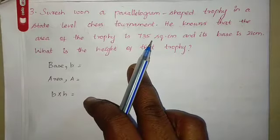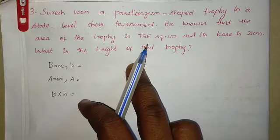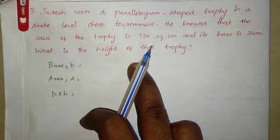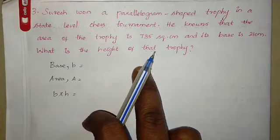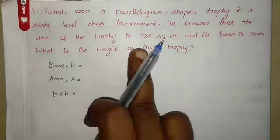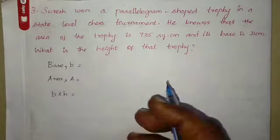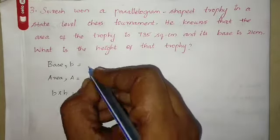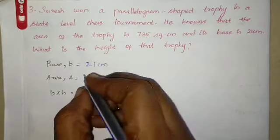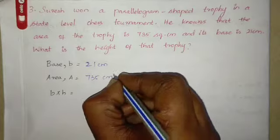Suresh won a parallelogram shaped trophy in a state level chess tournament. So chess tournament la Suresh vann parallelogram shaped la thikir a trophy vann pandraan. He knows that the area of the trophy is 735 square centimetre, so area vann 735. Base vann 21 centimetre — ippa height kaan padi kuna. So base vann 21 centimetre, area vann 735 centimetre square.